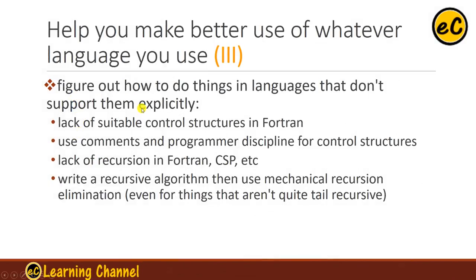Third, figure out how to do things in languages that don't support them explicitly. Sometimes there is no suitable control structure in Fortran, but you need to find a workaround — use comments and programmer discipline for control structures. Lack of recursion in Fortran or CSP requires good programming practice. Write the recursive algorithm, then use mechanical recursion elimination. Even though some of these problems no longer exist in modern languages, the point is to figure out how to do things that a language doesn't support.